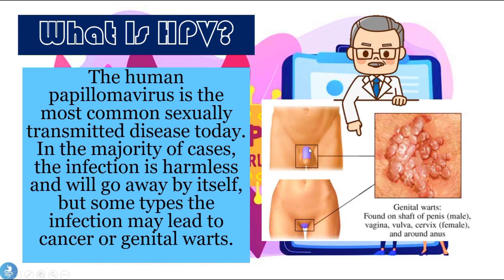In male patients, genital warts are found on the shaft of the penis. In female patients they can be found anywhere in the vagina, vulva, or cervix, and in patients who have anal sex they may also be found around the anus.